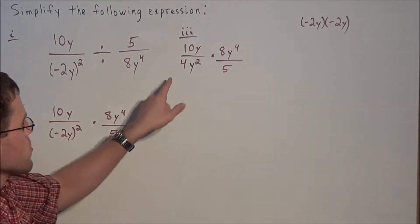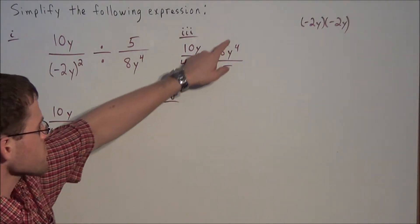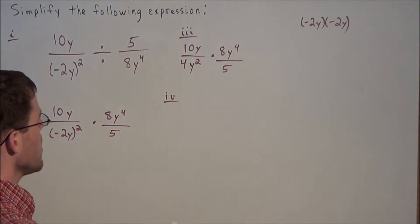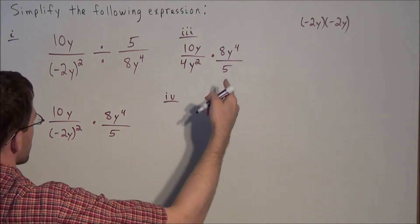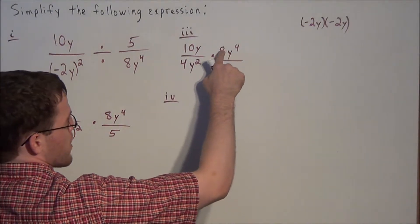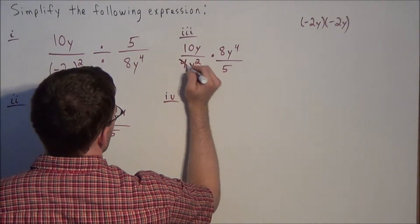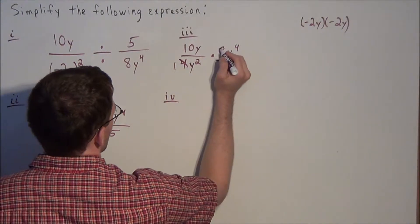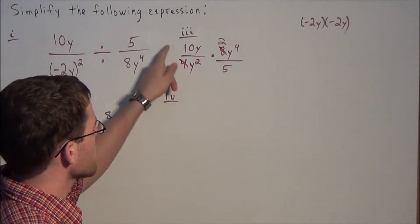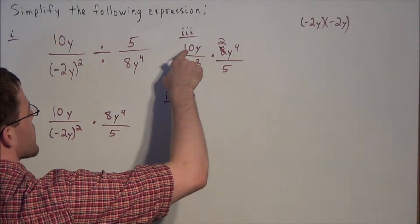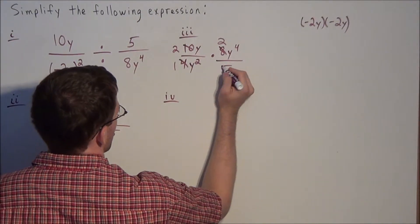Before moving to the next line we can simplify, since we have common factors between these two fractions. Notice that 8 divided by 4 is 2, so we divide the numerator and denominator of that fraction by 4: 4 divided by 4 is 1, 8 divided by 4 is 2. We also divide by 5: 10 divided by 5 is 2, and 5 divided by 5 is 1.